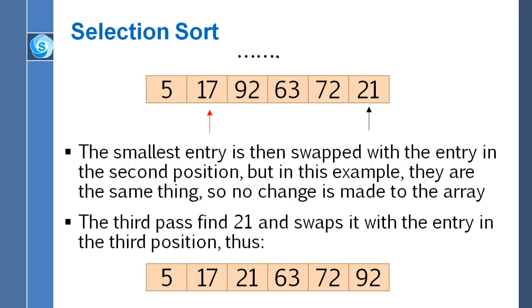On a third pass, both arrows would begin by pointing to 92. Then as they proceed, the number 21 would be discovered to be the smallest entry. So after that third pass, the 21 and the 92 would trade places. We'd arrive at this situation at the bottom. That's at the end of three passes. Now, similar to what happened to us with bubble sort, after three passes we actually have the array completely sorted. But that is, in part, due to luck.